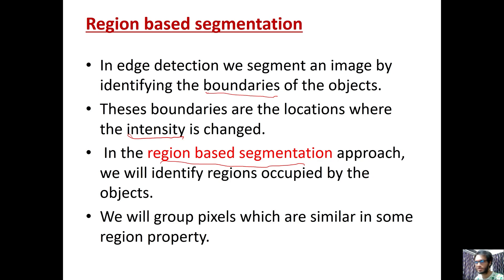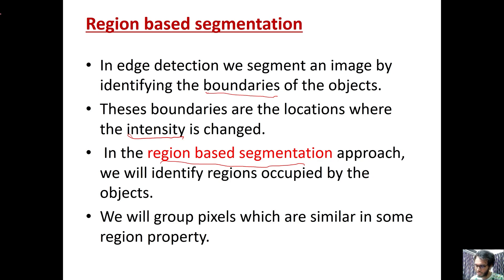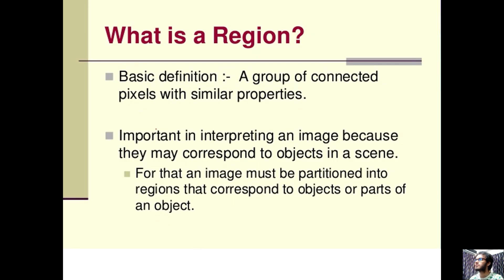The criteria can vary. We don't have intensity differences within a region. We have two different regions of pixels. Pixels in the same region share the same color. A region is defined as a group of connected pixels with similar properties.